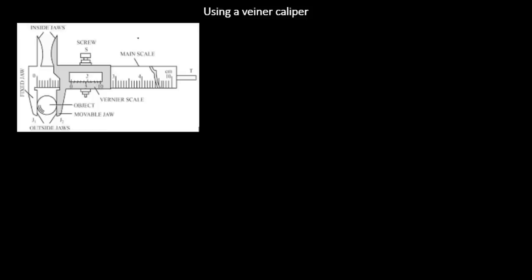How do we use a vernier caliper? This is a well-labeled diagram of a vernier caliper. This is the movable screw — with it we can move the vernier scale backwards or forwards, taking the movable jaw either towards or away from the fixed jaw. These are called the inside jaws. The jaws are used to hold firmly the objects, and once we have a firm grip we can fasten the vernier caliper using the locking screw.